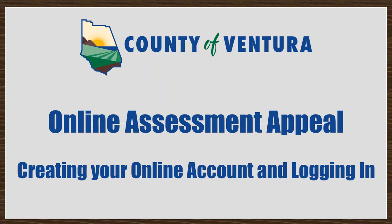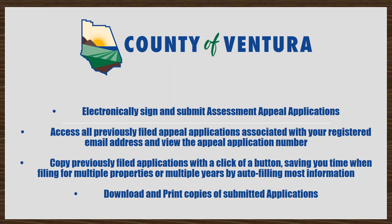The County of Ventura has launched a new online assessment appeal filing system that is easy to use and will help applicants file and access records for assessment appeal applications. Applications can be filed electronically online. Applicants can also electronically sign and submit applications, access all previously filed applications associated with their registered email address, view the application number, copy previously filed applications with the click of a button — saving time when filing for multiple properties or multiple years by auto-filling most information — and download and print copies of submitted applications.